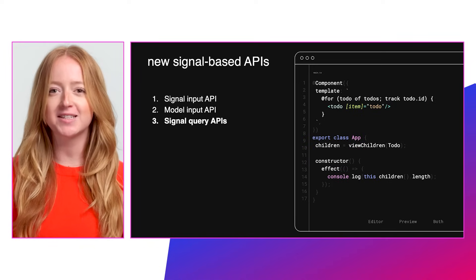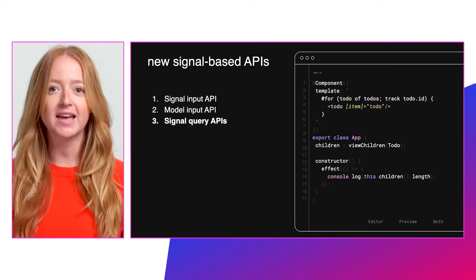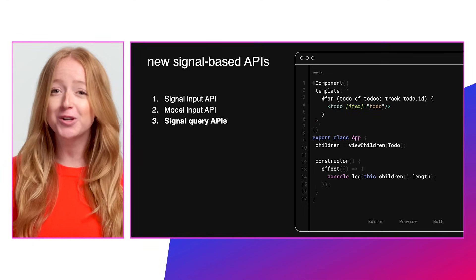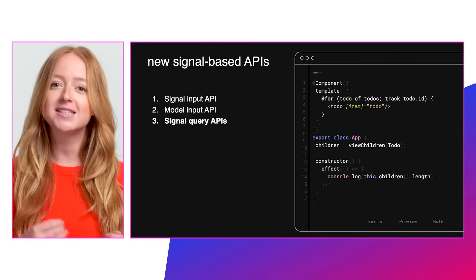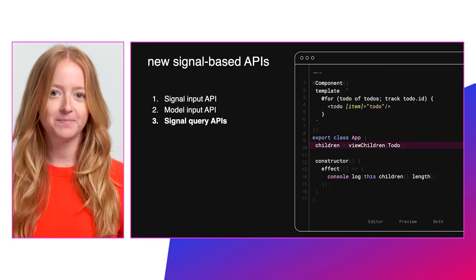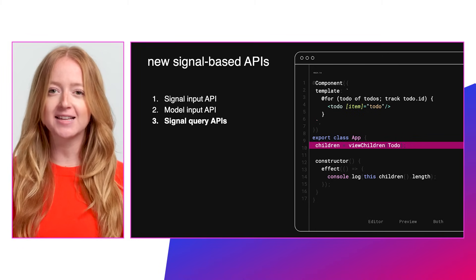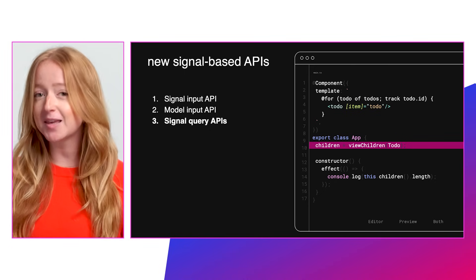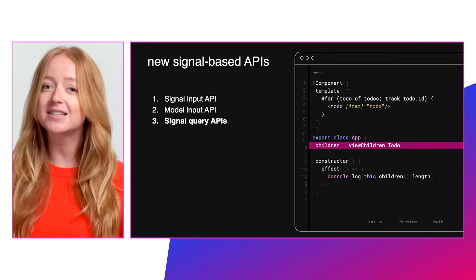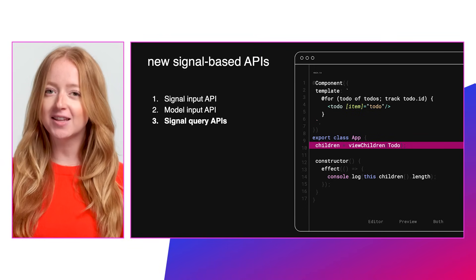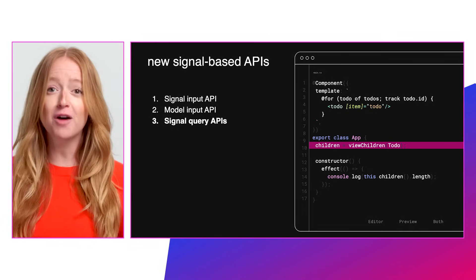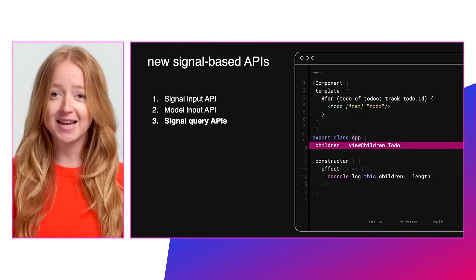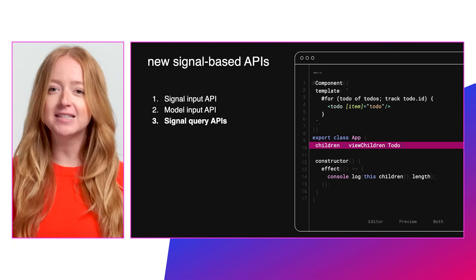We know that developers have long wanted a type-safe reactive way to interact with content children and view children in templates. We heard you loud and clear, and that's why we've built the new Signal Query APIs. The new approach exposes query results as signals, which means that query results can be composed with other signals using computed or effect, and drive change detection. Additionally, the Signal Query system offers other benefits like more predictable timing, simpler API surface, improved type safety, more accurate type inference, and lazier updates.